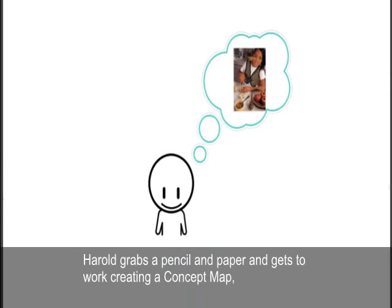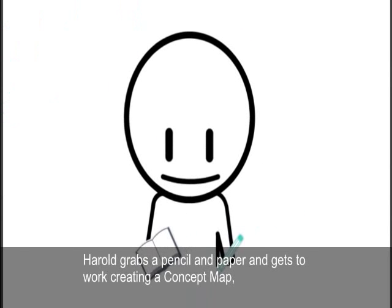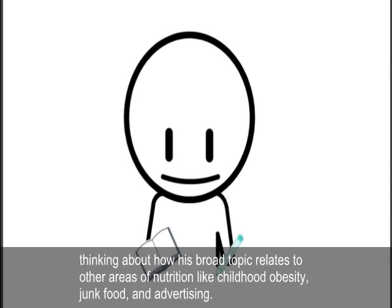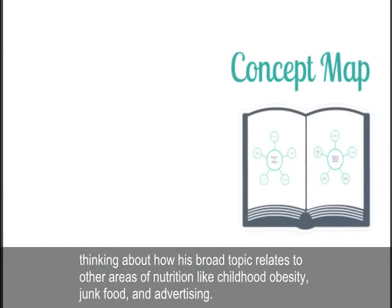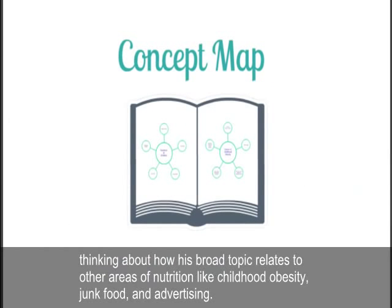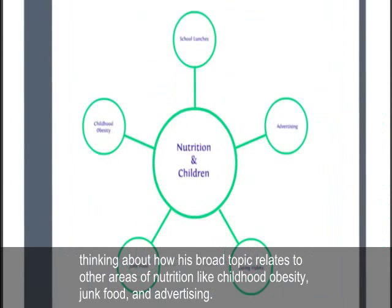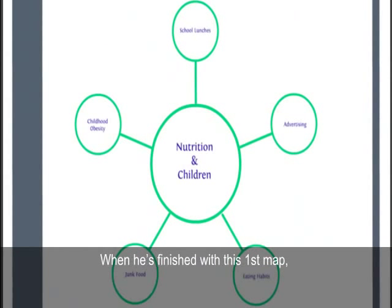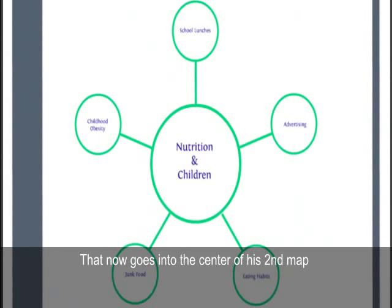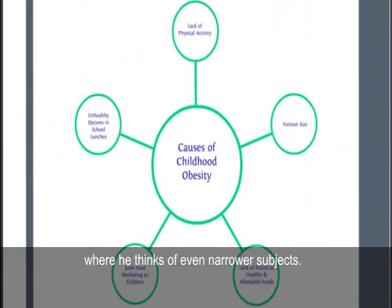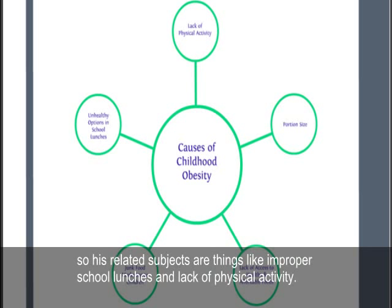Harold grabs a pencil and paper and gets to work creating a concept map, thinking about how his broad topic relates to other areas of nutrition, like childhood obesity, junk food, and advertising. When he's finished with this first map, Harold decides which related topic is of most interest. That now goes into the center of his second map, where he thinks of even narrower subjects. Harold's chosen the causes of childhood obesity, so his related subjects are things like improper school lunches and lack of physical activity.